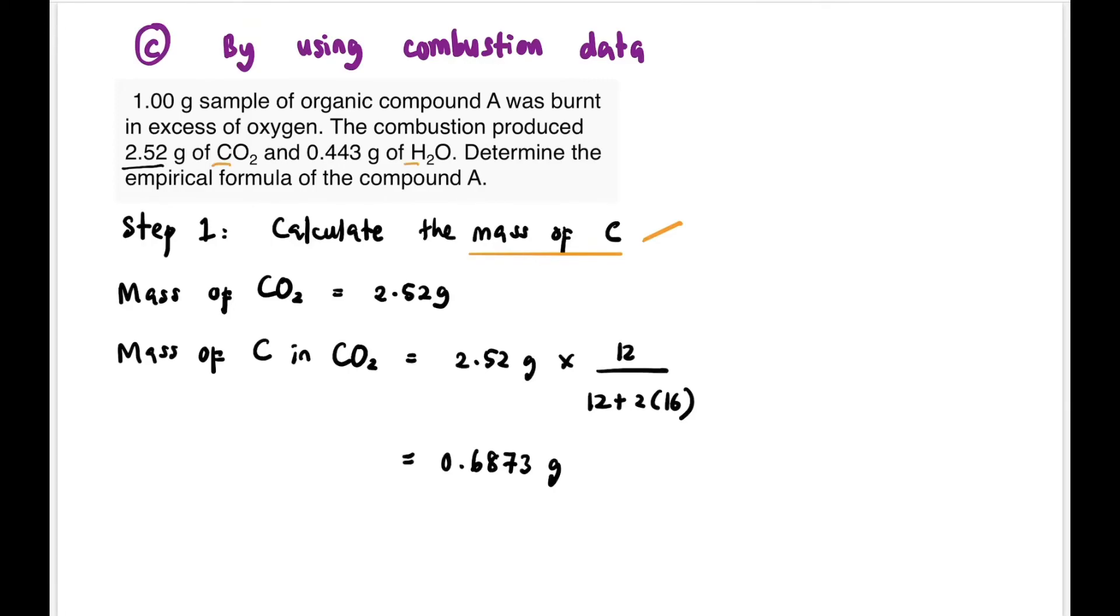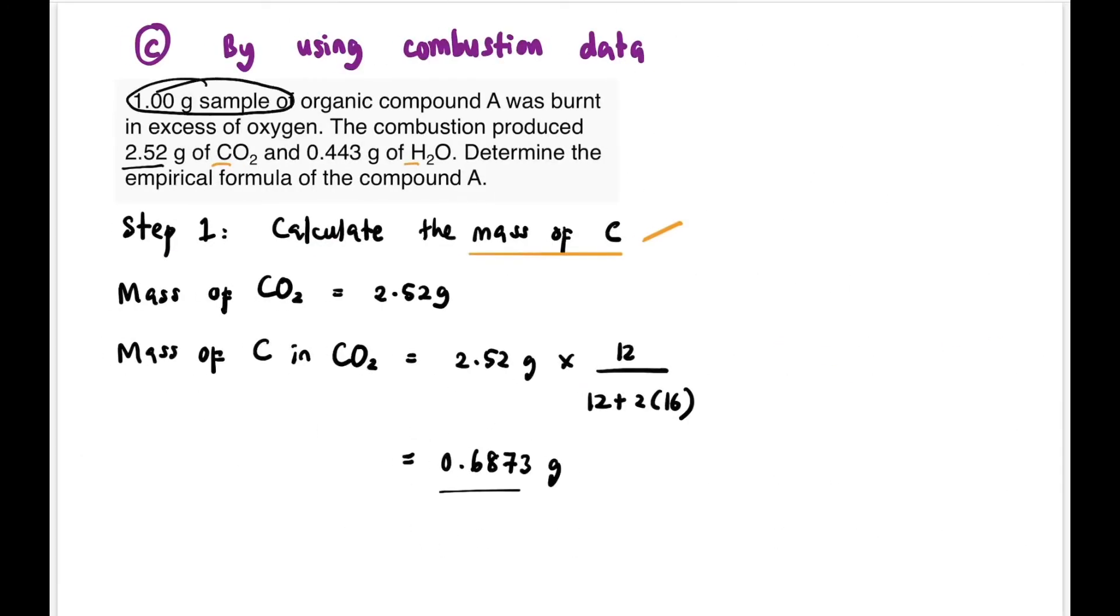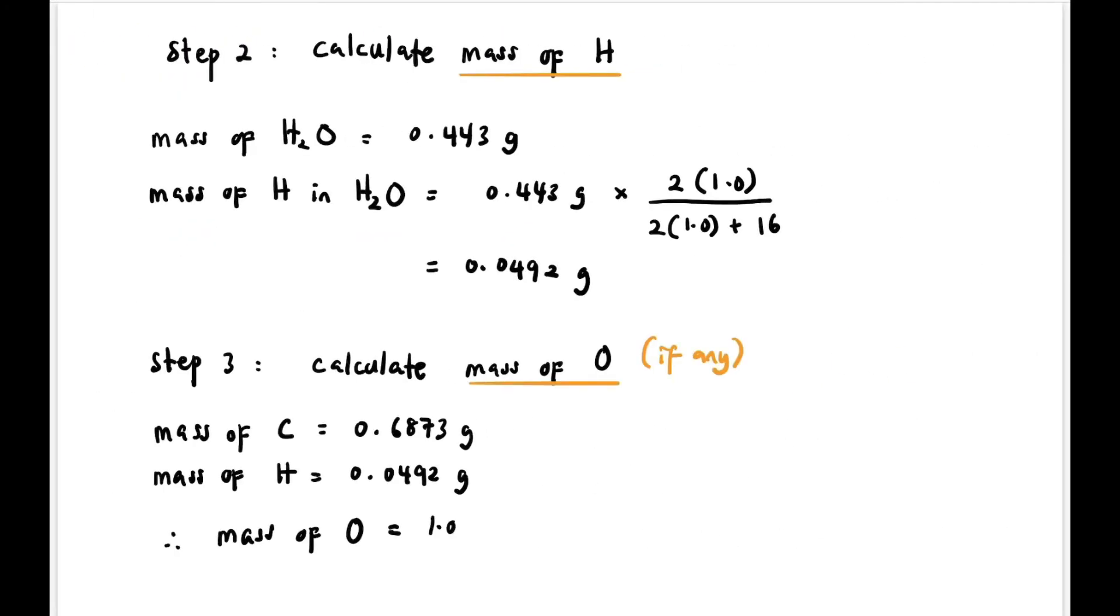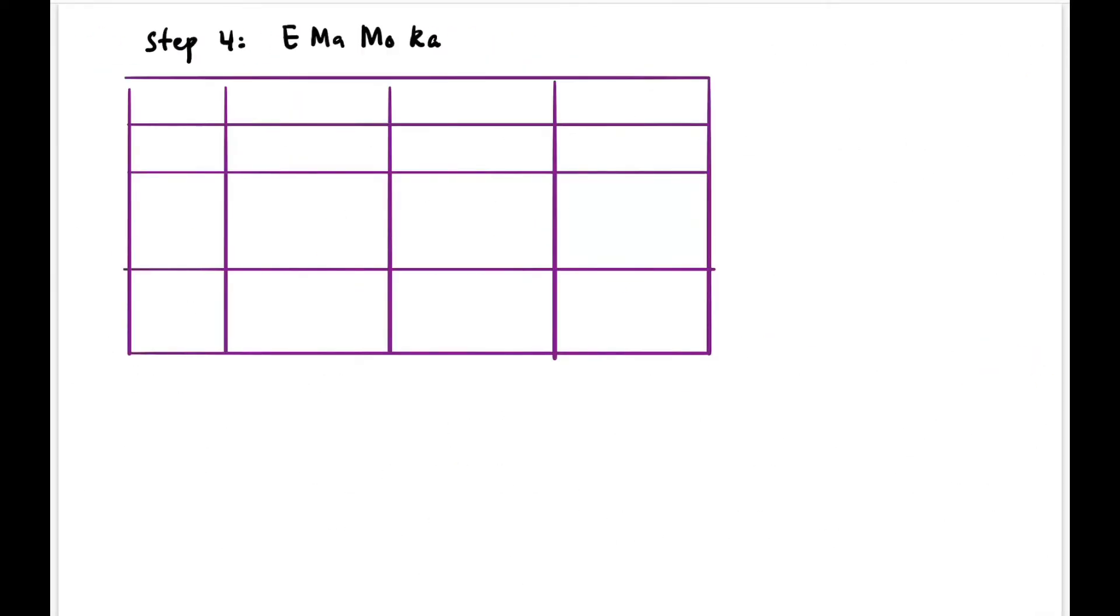Step 3 is to calculate the mass of oxygen, if present, because not all cases have oxygen. Let's list what we have: mass of carbon is 0.6873 grams, mass of hydrogen is 0.0492 grams. The question gives 1 gram as the mass of the whole sample. So we calculate mass of oxygen by taking 1.0 grams (mass of whole sample) minus mass of carbon minus mass of hydrogen, and we get the mass of oxygen. Now we have mass of carbon, hydrogen, and oxygen.